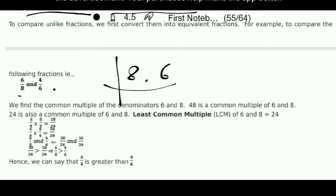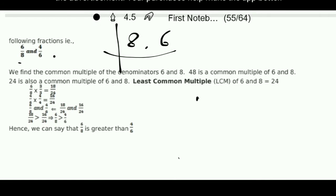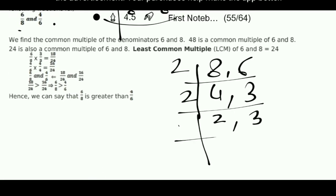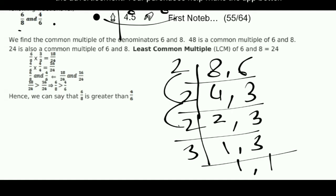LCM we have already learned in the previous class. How to find the LCM of 8 and 6? We start from 2: 2 fours are 8 and 2 threes are 6. Then again by 2, we get 4 and 3 remaining. Then 2 ones and 3, then 3 ones and 1. So we multiply: 2 × 2 × 2 × 3 = 24. The LCM of 6 and 8 is 24. Now we can compare 6 upon 8.